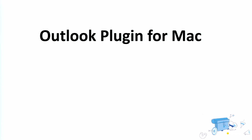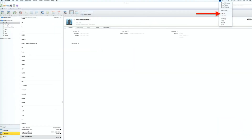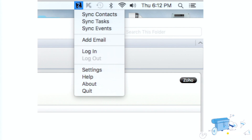We also have a plugin for Mac. Go to email settings and download and install the plugin for Mac. It's not as feature-rich as the Windows Outlook plugin, but you still have an option to associate emails to Zoho CRM and synchronize your contacts, tasks, and calendar. When you install the Mac plugin, you would see a 'Z' Zoho icon on the top. When you click it, you have an option to synchronize contacts, tasks, and events, and also to add emails manually.